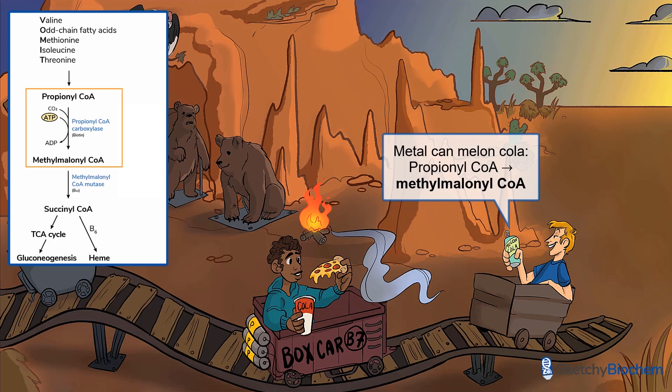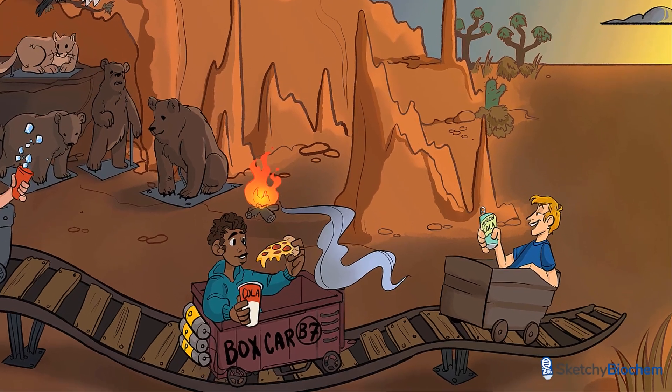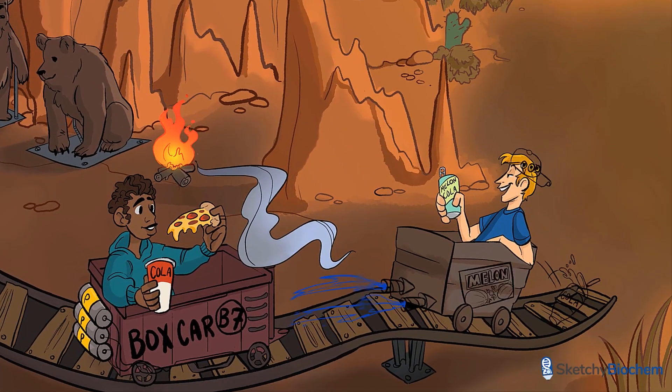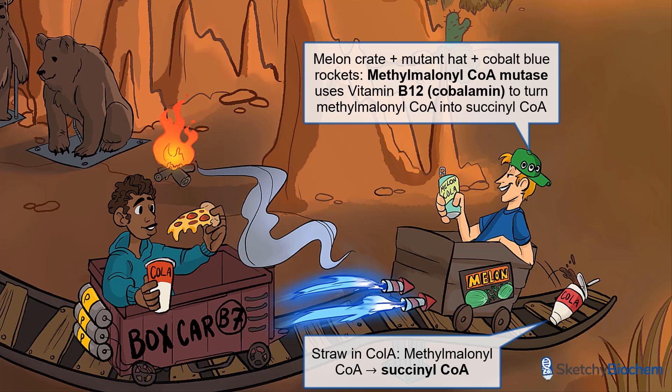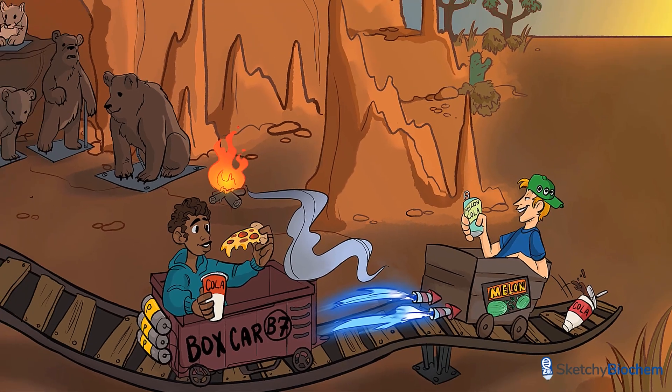Let's move on to the last step of the vomit pathway. Methylmalonyl-CoA mutase uses vitamin B12 to convert methylmalonyl-CoA to succinyl-CoA. Those cobalt rockets are our recurring symbol for vitamin B12, aka cobalamin. The final product is succinyl-CoA, again represented by a cola with a straw.